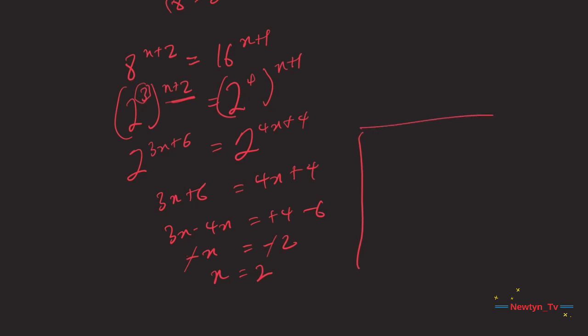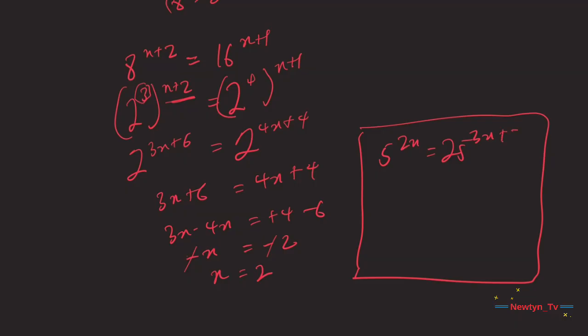Pause the video and try to do this on your own: 5 exponent 2x equal to 25 exponent (3x plus 2).